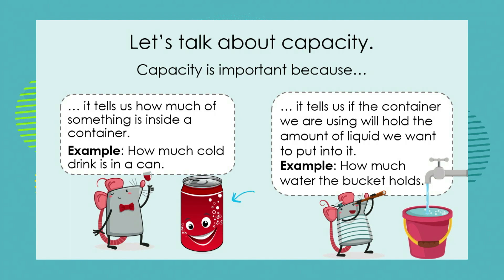Sometimes we want to know how much of something we are drinking, so we can have a look on the can and it will tell us how much is inside. Another important example is we are always told that we need to drink two liters of water every day, so if we look at the water bottle we can see how much liquid is inside to know how much we need to drink.